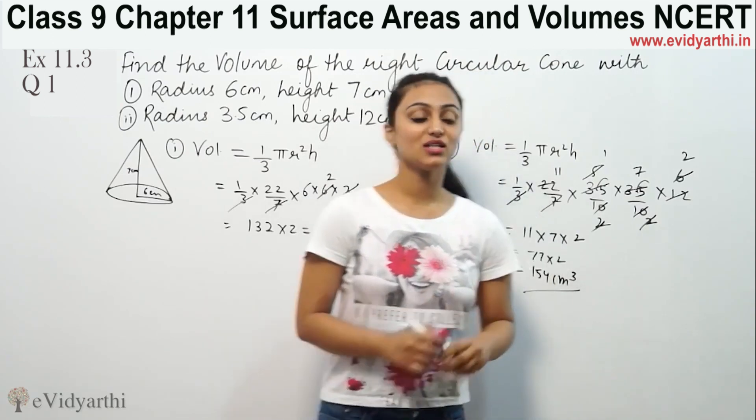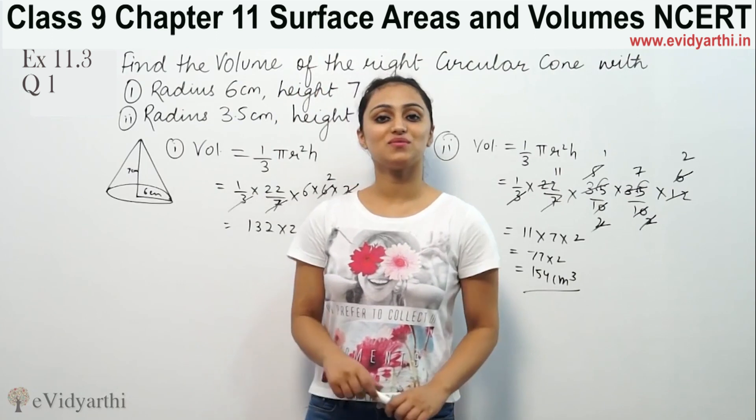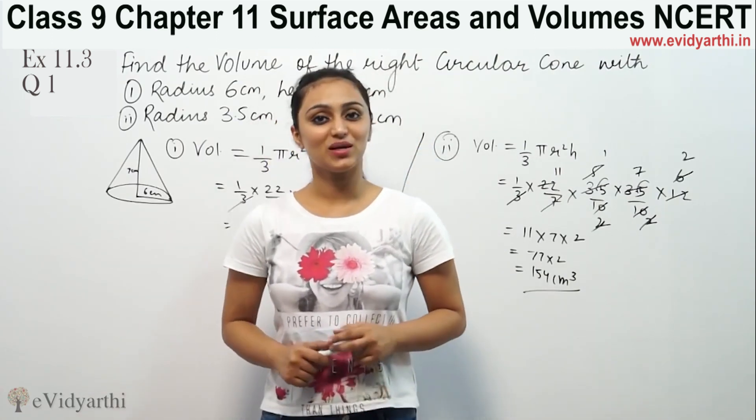Volume is always in cubic units. So this is 154 cm³. This was the first question from exercise 13.7. Do watch the next video for some more questions. Goodbye.